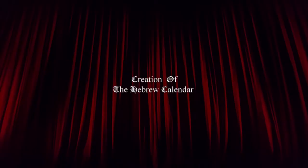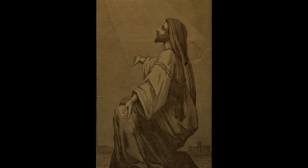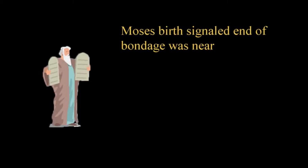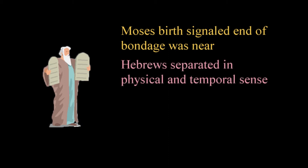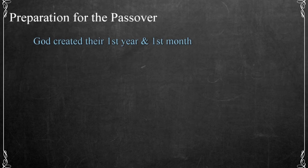At Sinai, God told Moses that the Hebrews would be a peculiar treasure unto him above all people, and ye shall be unto me a kingdom of priests and an holy nation, in Exodus 19:5. Their purpose was to eventually bring the Messiah into the world to bless all families of the earth as God promised Abraham. When Moses was born, the Hebrews had been enslaved for almost 400 years, and the time had come for their deliverance. As God revealed the details of the final plague, he also separated them in a temporal sense, establishing a new timeline unique to the Hebrews, with distinct time markers noting events.